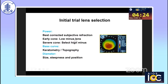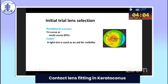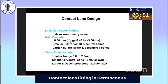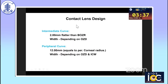The initial trial lens is usually based on subjective refraction — low minus lenses for early cone, and higher minus for severe cone. Topography is ideal and should be used rather than keratometry alone. The diameter of the lens depends on the size of the cone and its stiffness and position. A light tint should be given so the patient can see the lens. Start with the mean keratometry value, use smaller diameter lenses for smaller and central cones, and larger diameter lenses for larger and decentered cones.